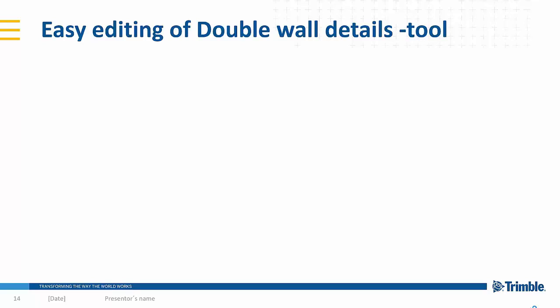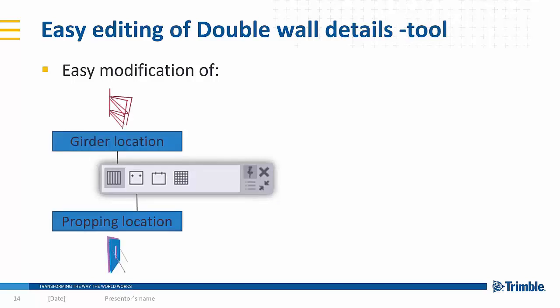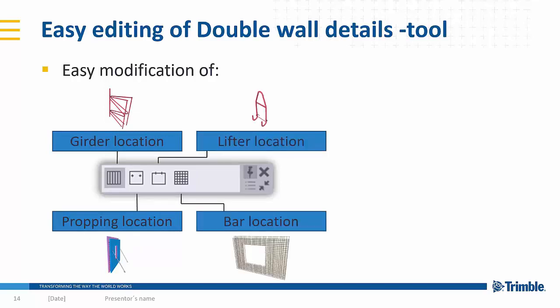Since then, we have developed the tool to have easy-to-edit direct modification for multiple different details in a double wall. With the direct modification, you get the contextual toolbar where you can start either editing the girder locations, propping insert location, lifter locations, or the bar locations in the mesh.